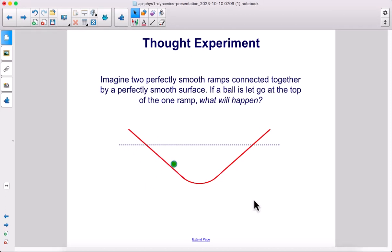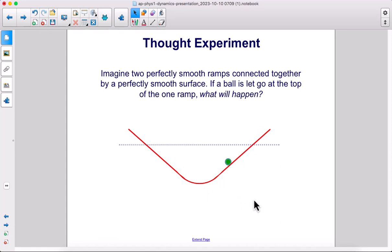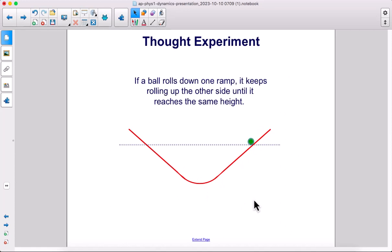Alright, so it's moving down the ramp to the bottom and back up. If a ball rolls down one ramp, it keeps rolling up the other side until it reaches the same initial height.